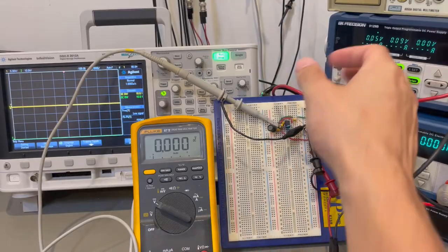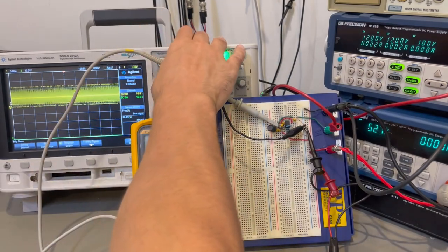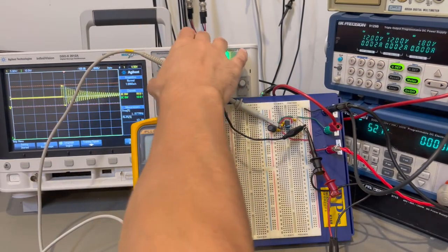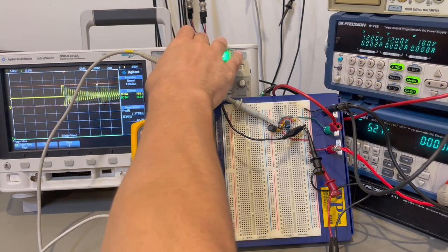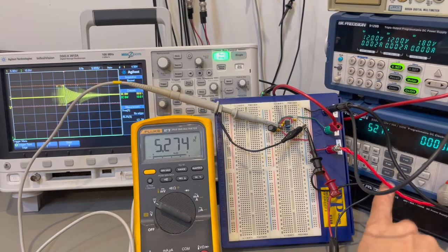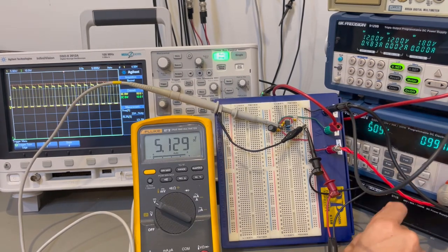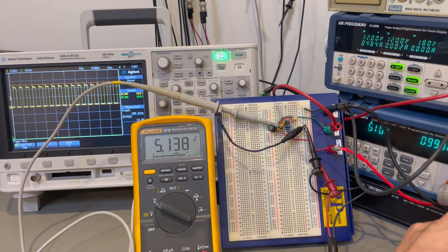The next step is to power up the breadboarded version and to verify that the switching is stable. At light load, the switching will be discontinuous, so it's really hard to tell if the circuit is working properly until we add a load. Once the inductor current becomes continuous, we should have a constant duty cycle train of pulses with a duty cycle equal to Vout over Vin.